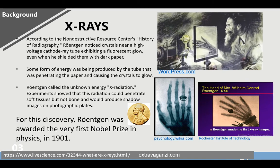According to the Non-Destructive Resource Center's History of Radiography, Röntgen noticed crystals near a high-voltage cathode ray tube exhibiting a fluorescent glow, even when he shielded them with dark paper. Some form of energy was being produced by the tube that was penetrating the paper and causing the crystals to glow. Röntgen called the unknown energy X-radiation. Experiments showed that this radiation could penetrate soft tissues but not bone, and would produce shadow images on photographic plates.